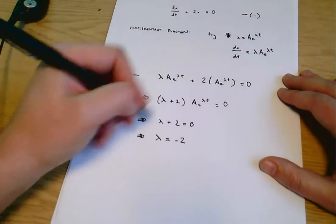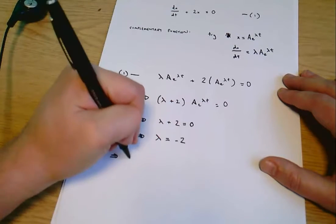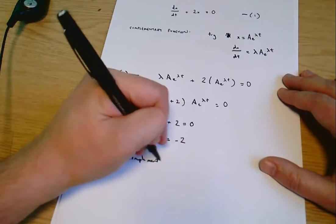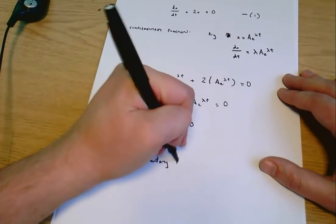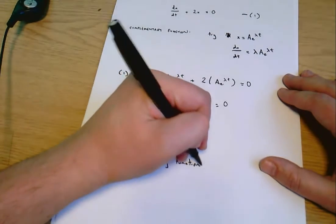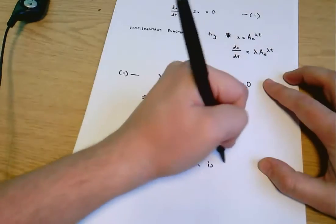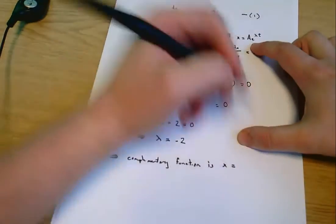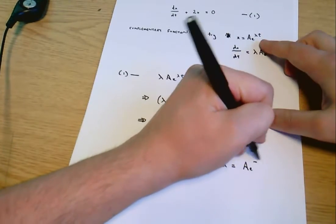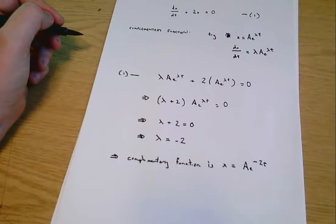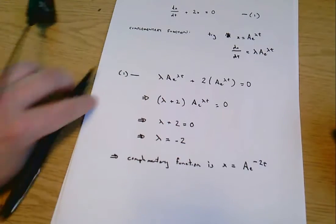And that means that the complementary function is x equals a e to the minus two t. And that's our final answer.